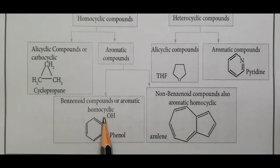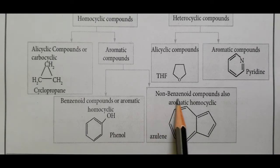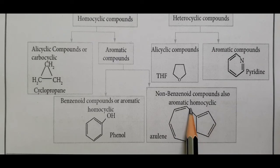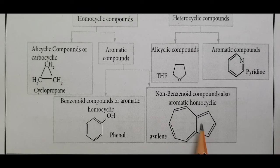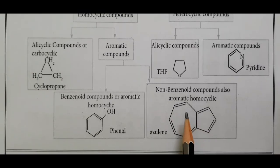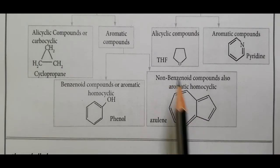Examples of benzenoid compounds include benzene (C6H5OH), phenol, toluene, and aniline. Non-benzenoid compounds are also aromatic homocyclic; examples include azulene. There are also non-aromatic non-benzenoid homocyclic compounds.